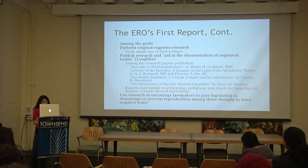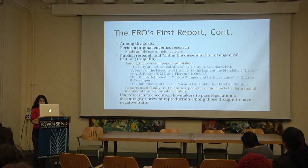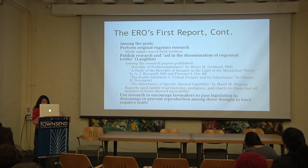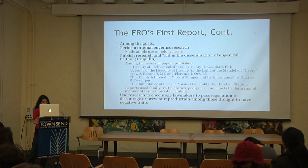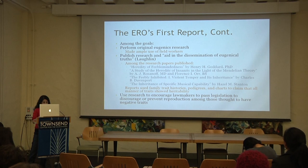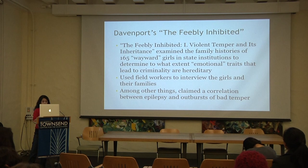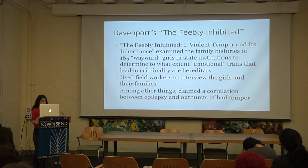Other goals were to do original research on heredity and eugenics and to publish this research to disseminate 'eugenical truths.' These reports used family trait histories, pedigrees, and charts to demonstrate the inheritance of all manner of traits and to encourage policymakers to pass legislation to encourage reproduction among those believed to possess positive traits and discourage or prevent reproduction among those considered to have negative traits. For example, Davenport's 'The Feebly Inhibited One: Violent Temperament Inheritance' examined the history of 165 wayward girls in state institutions to determine to what extent emotional traits leading to criminality were hereditary.